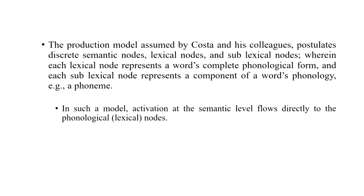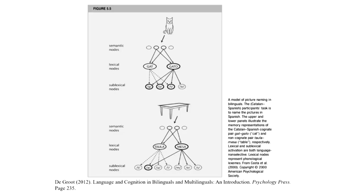In such a model, once there is activation at the semantic level, it reaches down to phonological nodes where whole words are represented, and then further down to sub-lexical nodes where individual sounds are assembled. For cognates, sub-lexical nodes are shared between the two languages; for non-cognates, only some sounds from the target language's word overlap with the non-target language. This architecture helps explain how both languages can be activated at the lexical level while selection remains language-specific.